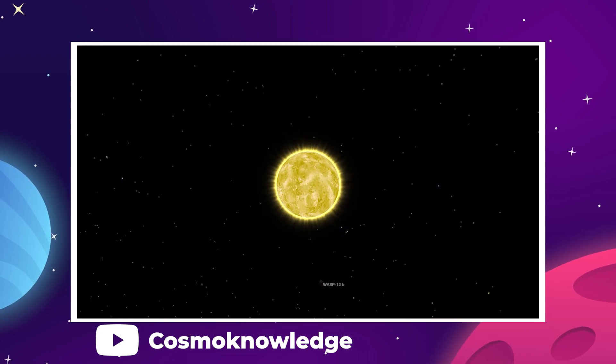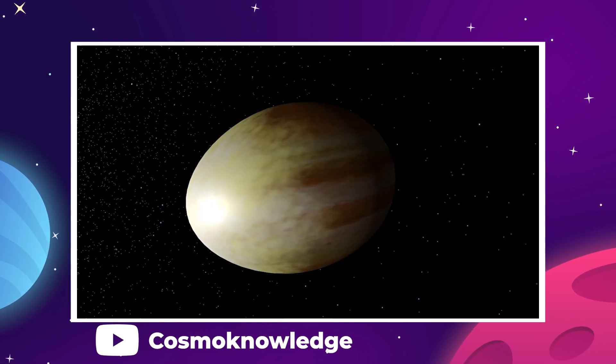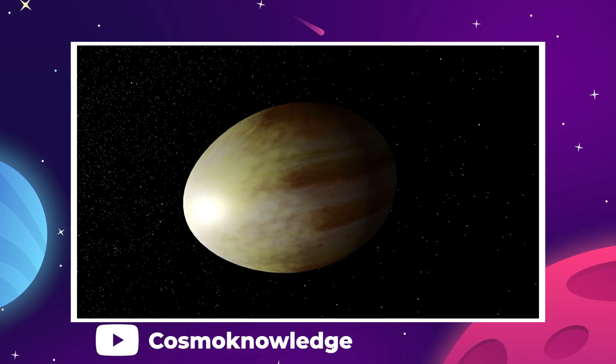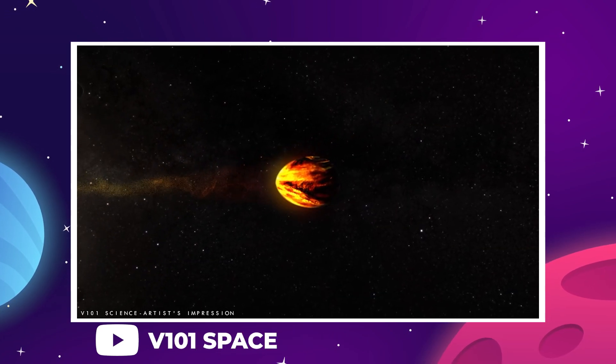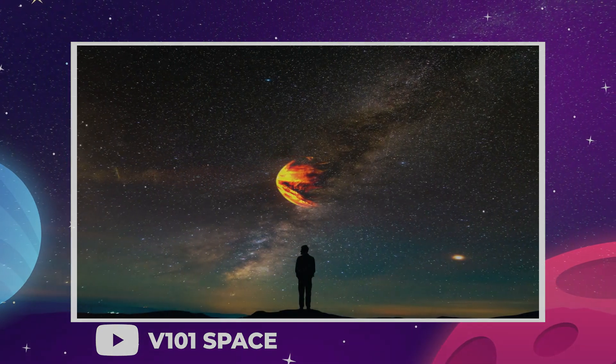The force of gravity pulling on the exoplanet causes tidal forces that are so strong that it's been stretched out into a kind of egg shape, with the pointy end being slowly siphoned off into oblivion.